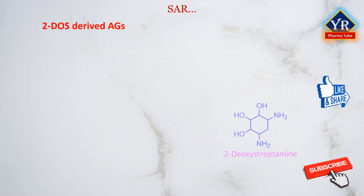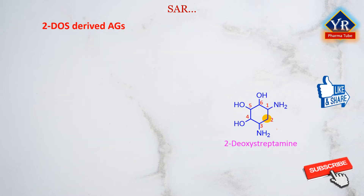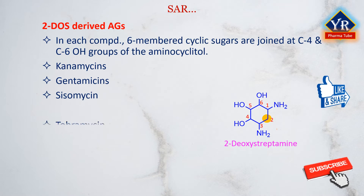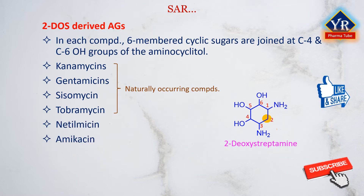The majority of clinically important aminoglycosides possess a disubstituted 2-deoxystreptamine aminocyclitol. In each compound, six-membered cyclic sugar units are joined onto the C4 and C6 hydroxyl groups on the aminocyclitol through glycosidic linkages. The kanamycins, gentamicins, sisomycin, and tobramycin are naturally occurring compounds belonging to this classification, while netilmycin, amikacin, and dibekacin are semisynthetic congeners.